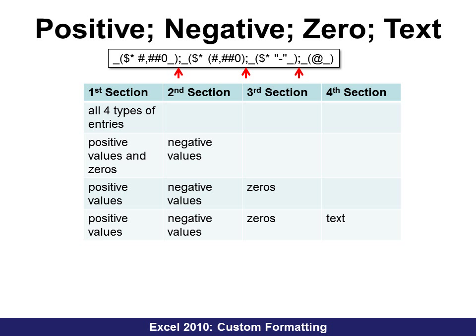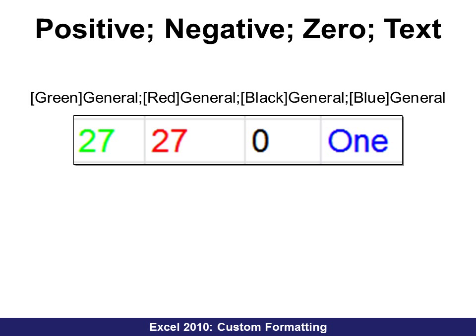What if you have two or three semicolons? The first section is always positive, or all. If you have one section, it applies to positive, negative, zero, and text. The second section handles negative values. The third section, after the second semicolon, is what zero looks like — in this case, zero shows as a dash. The last section is what text looks like. So you can see different styles based on whether the value is positive, negative, zero, or text. For example, positive numbers green, negative numbers red, zeros black, and text blue.